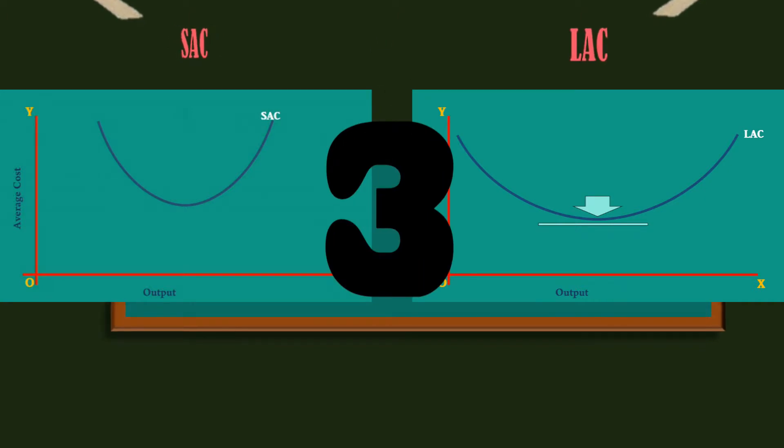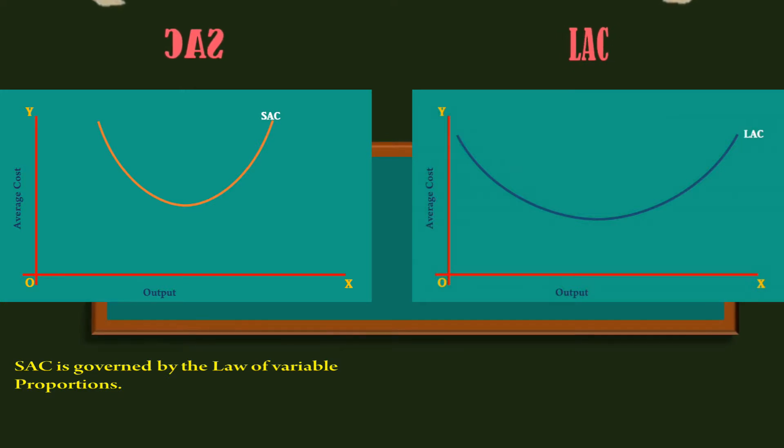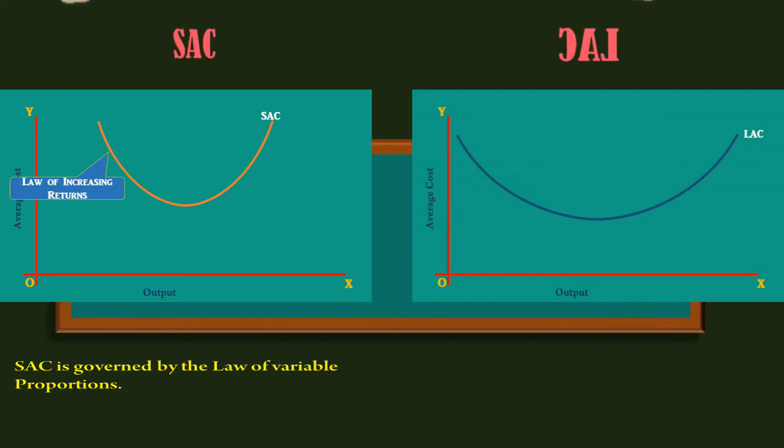3. The shape of the short run average cost curve is governed by the law of variable proportions. It falls initially because of the operation of the law of increasing returns.